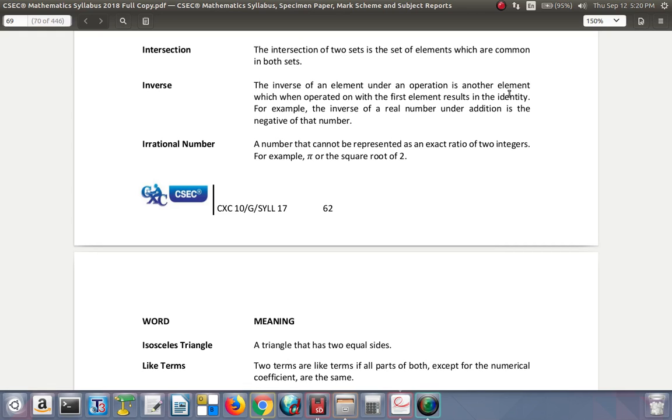The multiplicative inverse of 5 is 1 over 5, 1 fifth. And the multiplicative inverse of 1 fifth is 5. Because when you multiply them, you get the multiplicative identity of 1.